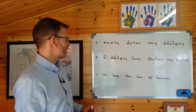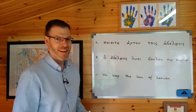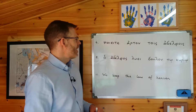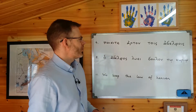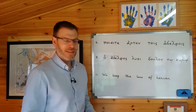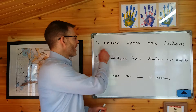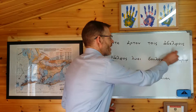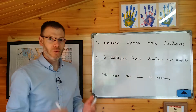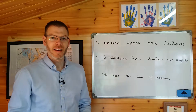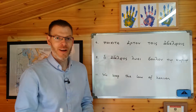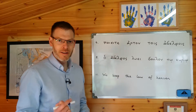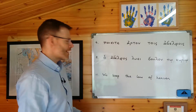Here's the first example, a nice Greek into English example. Number four: poieite arton tois adelfois. As always, I encourage you to start with the verb. So look through these, see if you can find the verb — pause the video and give yourself a chance to find it.